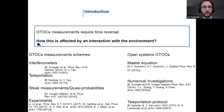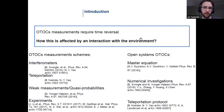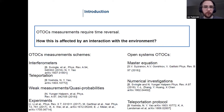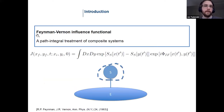The question I'm going to ask is: how are OTOCs affected when you let your system of interest interact with some environment? This is what typically happens in experiment. My approach here is a different one: I'm going to use the so-called Feynman-Vernon influence functional approach.